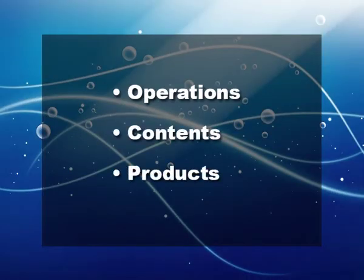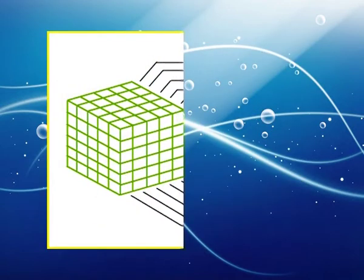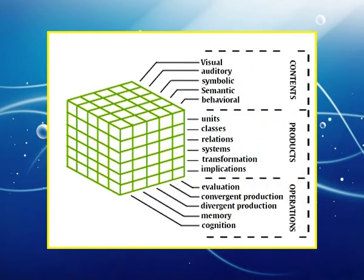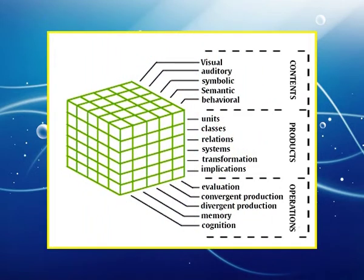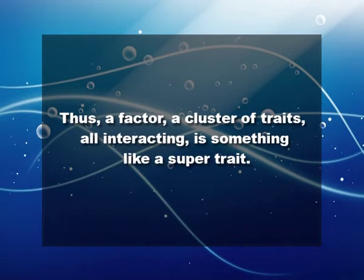The three compartments are: one, operations; two, contents; and three, products. Within each category he identified a number of factors. The result is the three-dimensional model shown in the figure here. In this model, five by six by four blocks give a total of 120 different traits. Each trait is defined as a distinguishable, relatively enduring way of functioning. A group of traits makes up what is called a factor — a cluster of traits all interacting, something like a super trait.